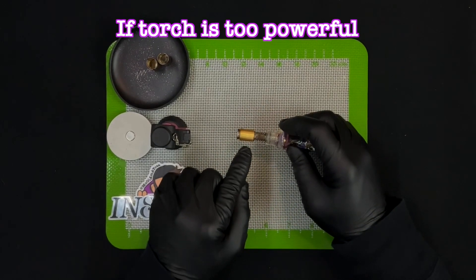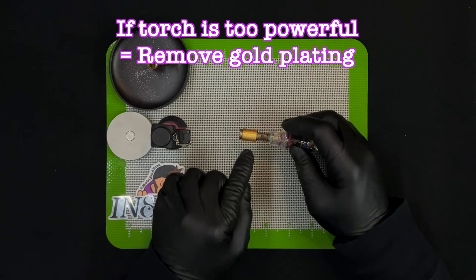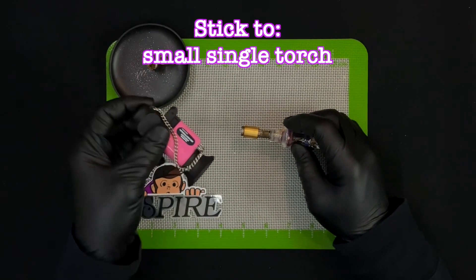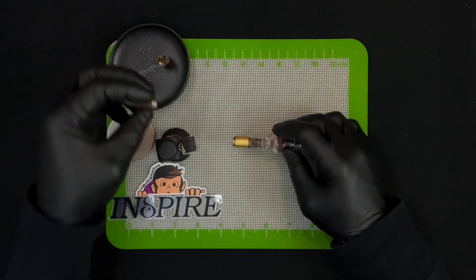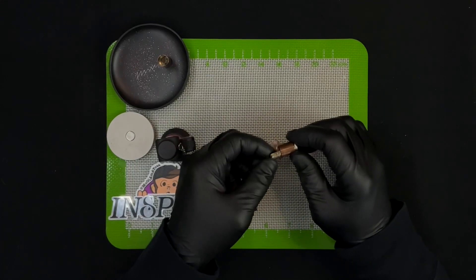The only thing with the gold FMJ that you have to be aware of: with a torch that's too powerful you can actually remove the gold plating. So you're really going to want to stick to a small single torch.